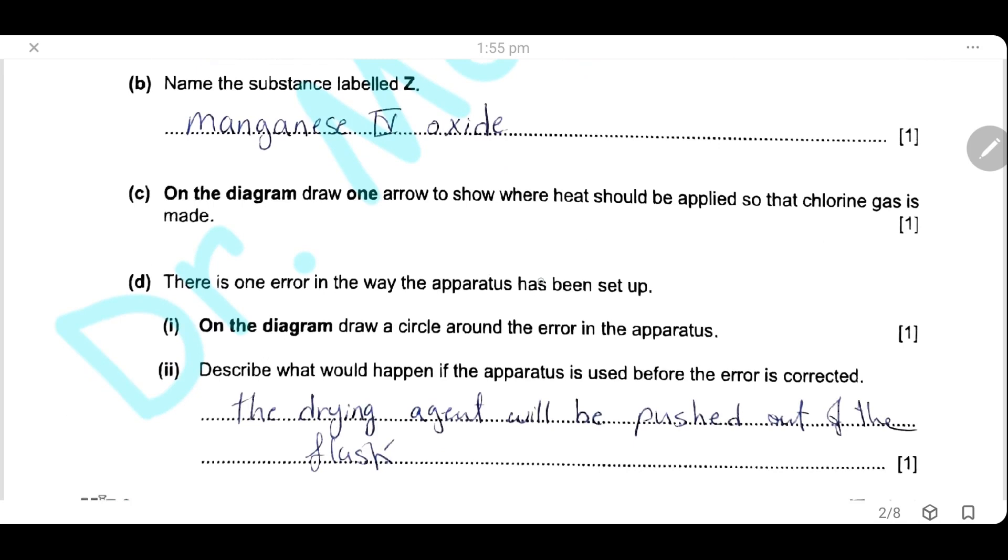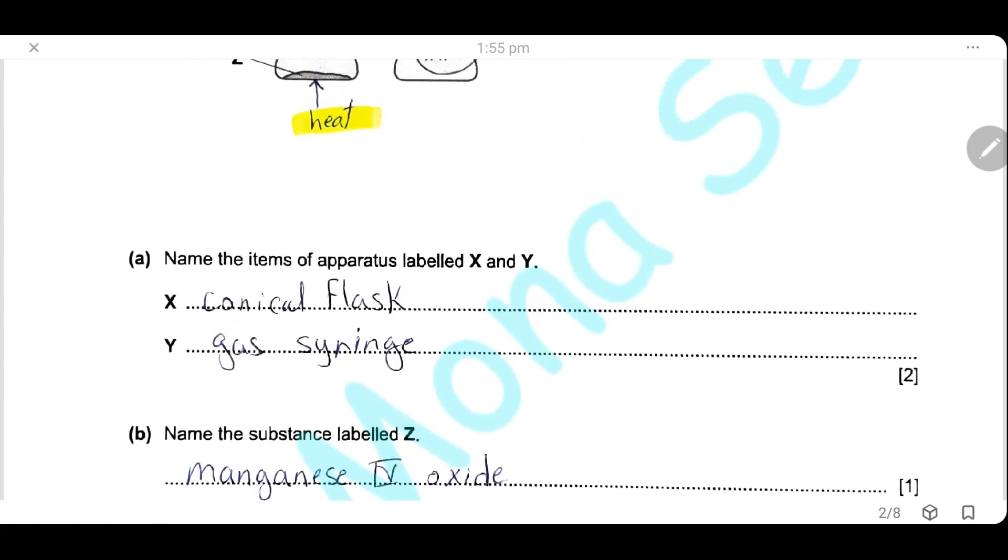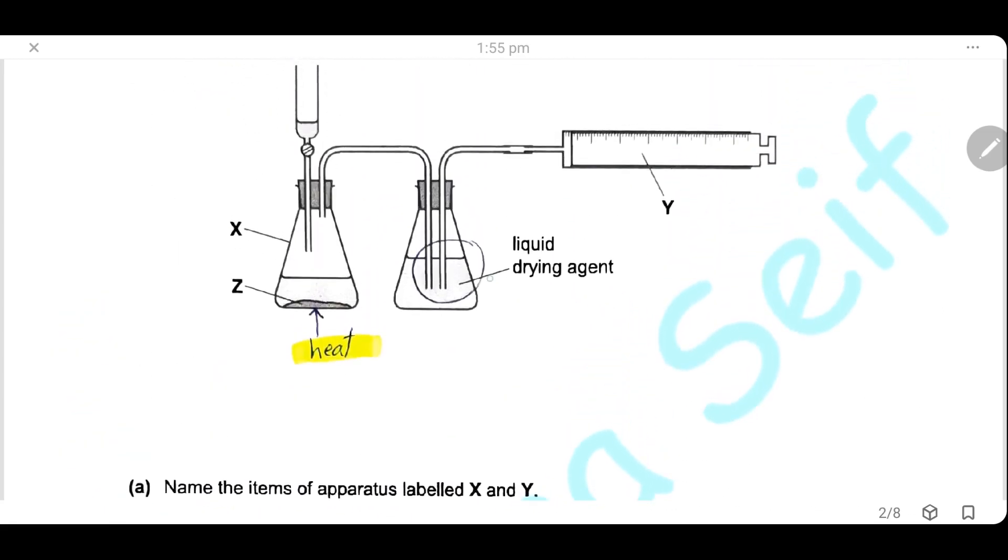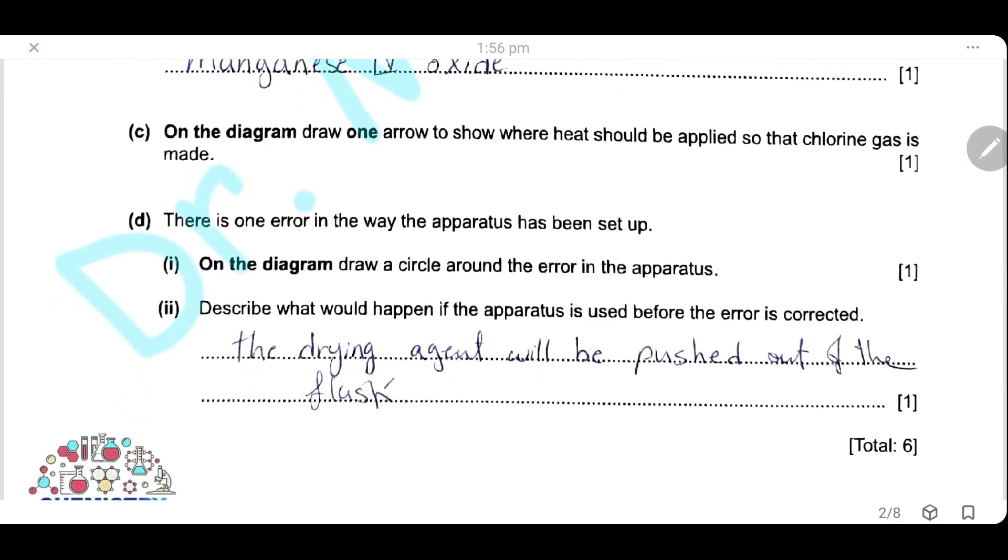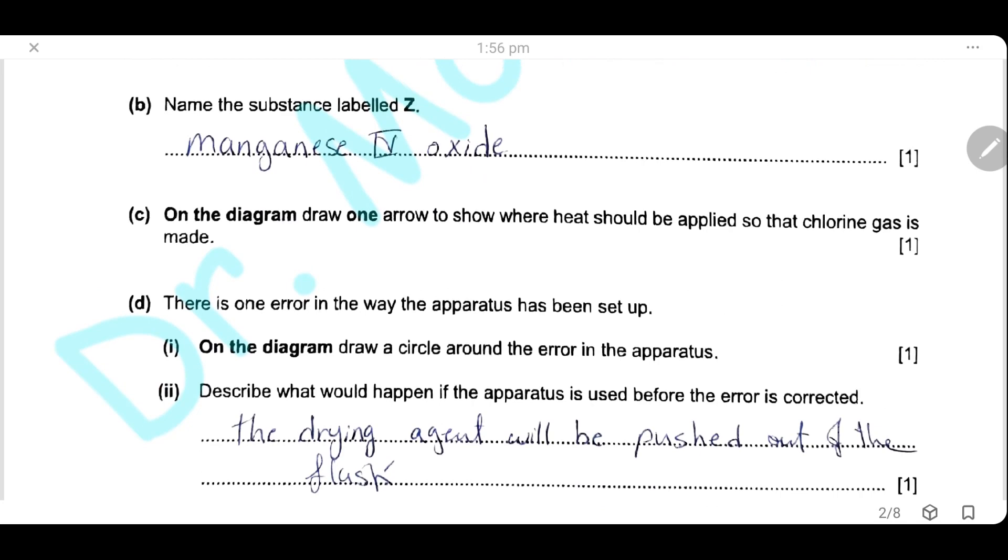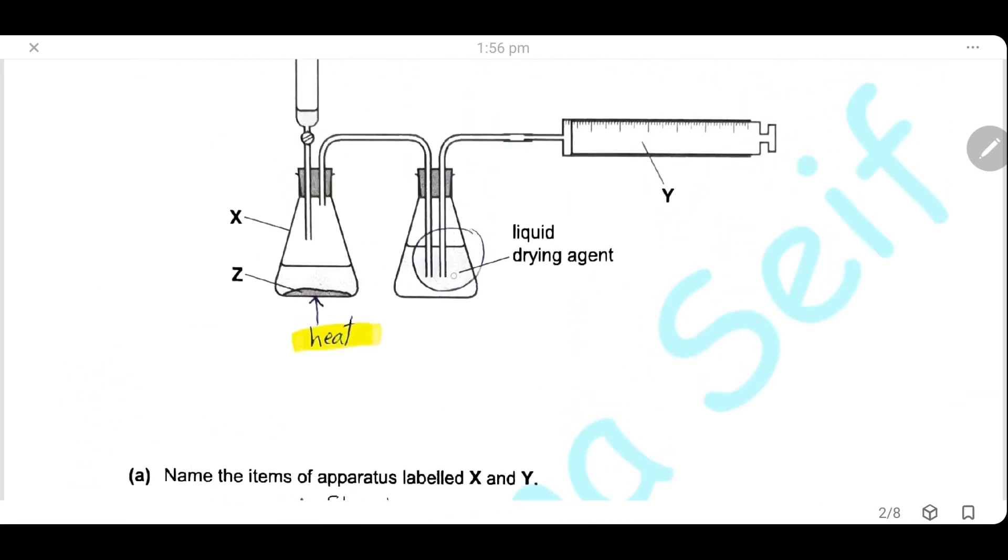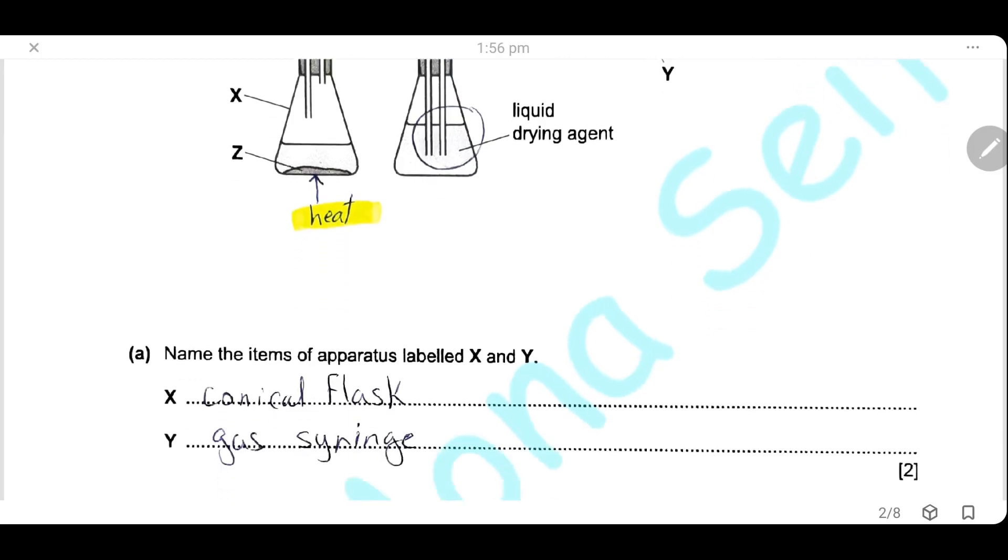There is one error in the way the apparatus has been set up. On the diagram, draw a circle around the error in the apparatus. We will go back to the apparatus here. Draw a circle around the tube that comes out from the drying agent. This tube should be above the level of the drying agent, so after the gas has been dried, it should travel upwards through this tube to the gas syringe. Describe what would happen if the apparatus has been used before this error is corrected. The drying agent will be pushed out of the flask and collected with the gas in the gas syringe.